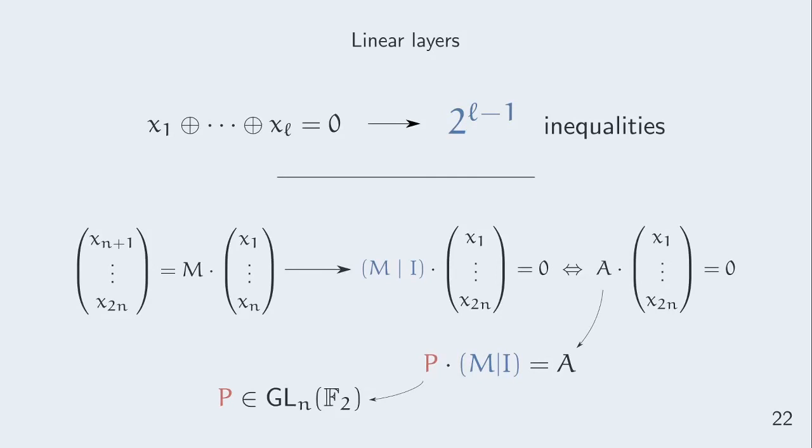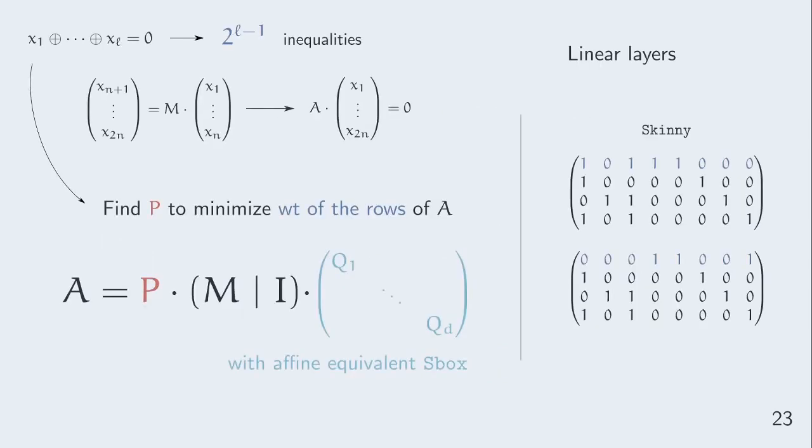Now, imagine you have to model an F2 linear operation given by matrix M. You can rewrite the constraint as M slash identity matrix times X equals 0. Your only hope will be to find equivalent constraints given by matrix A, which means computing an invertible matrix P such that P times M slash identity equals A.